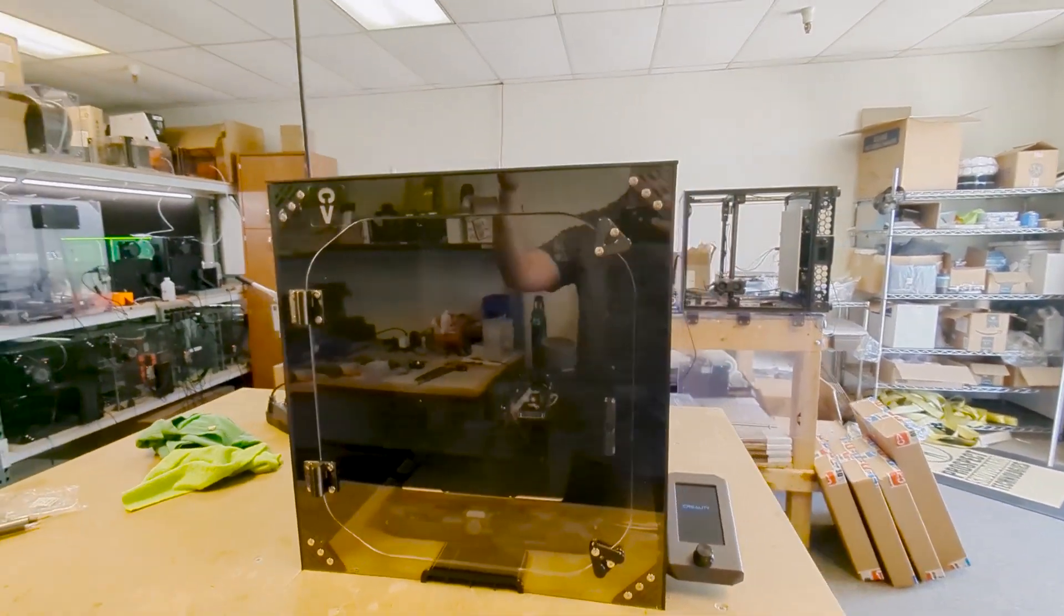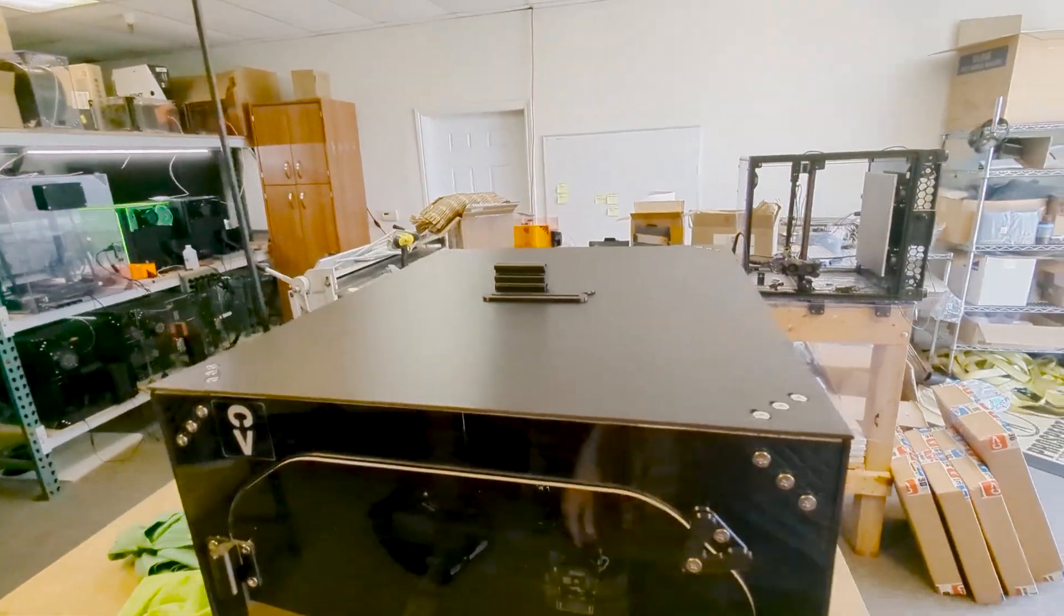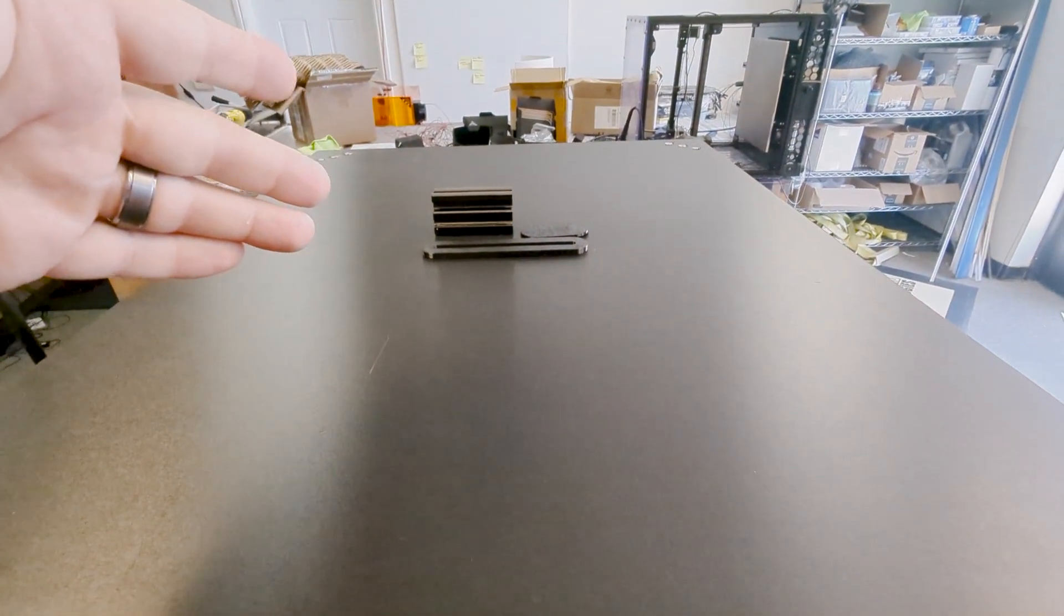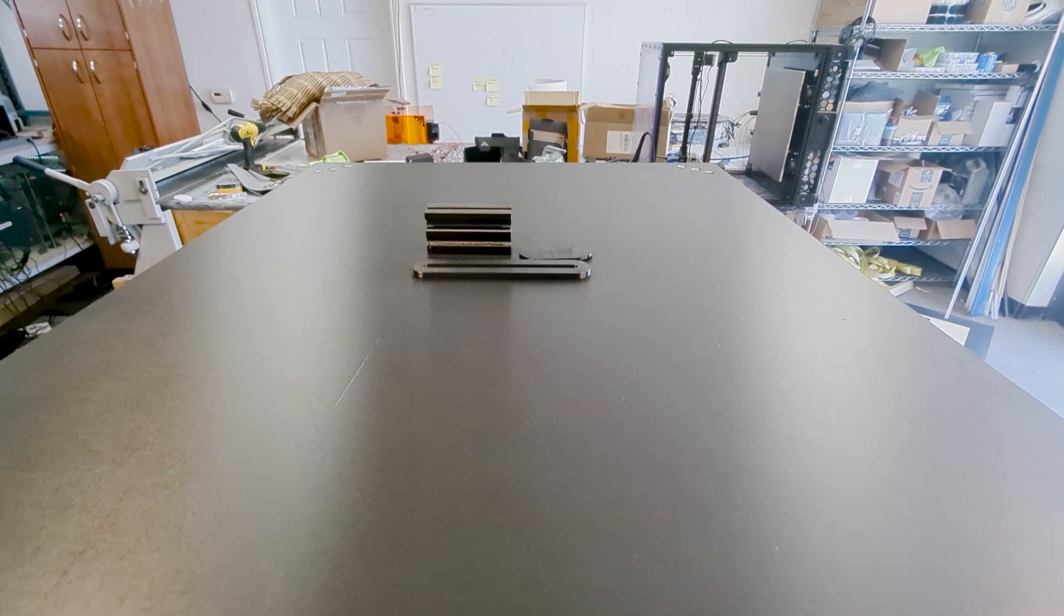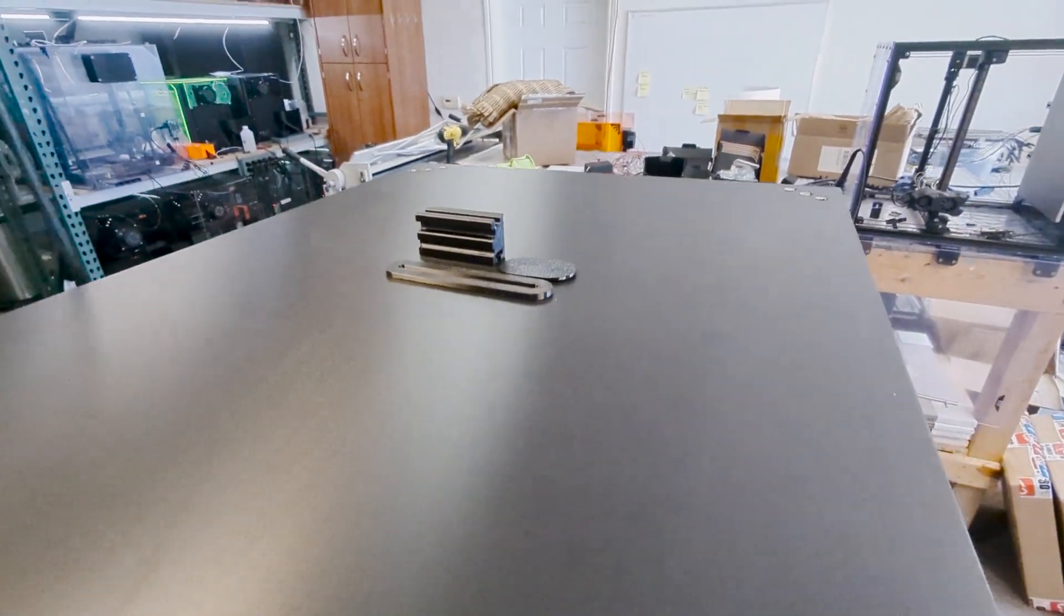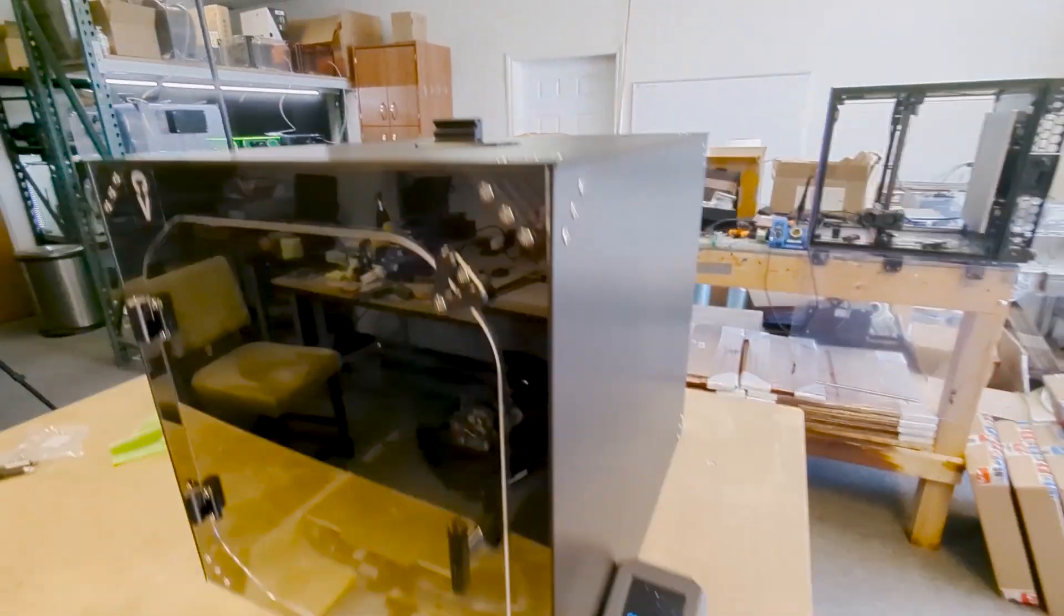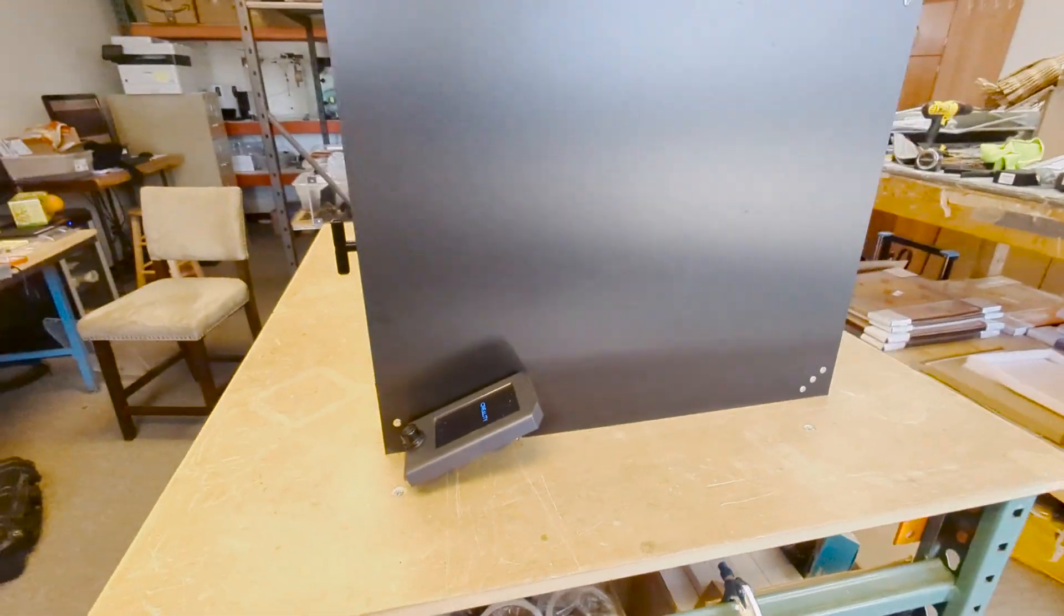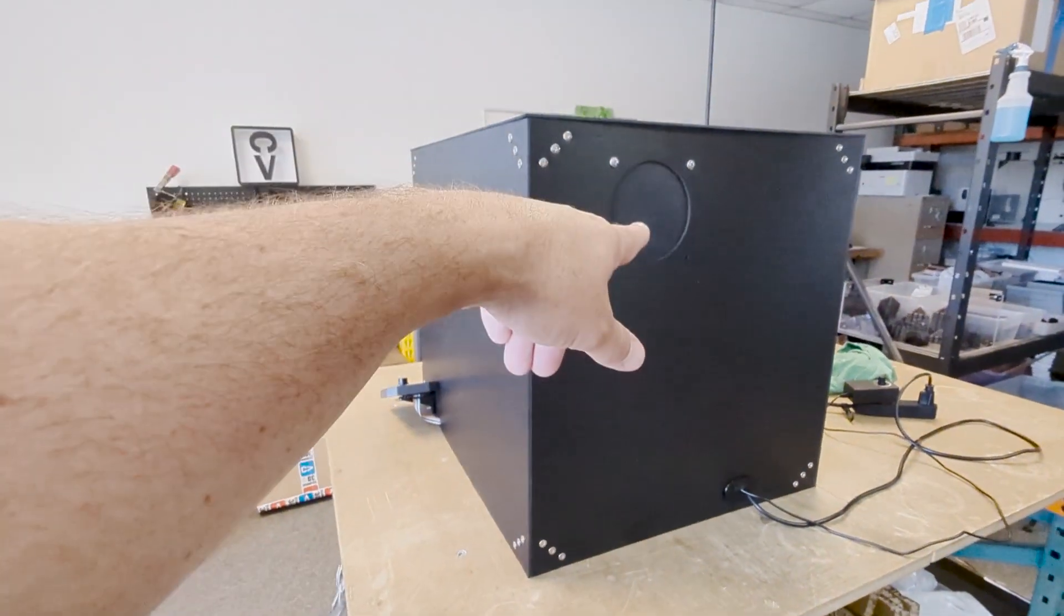With most of our enclosures, we have a nice front door, and then up on top we usually have a filament feed port. The Ender 3 S1 also has a bracket to hold onto your spool holder and then a port for your filament sensor wire. On the outside, you have your display hooked up.